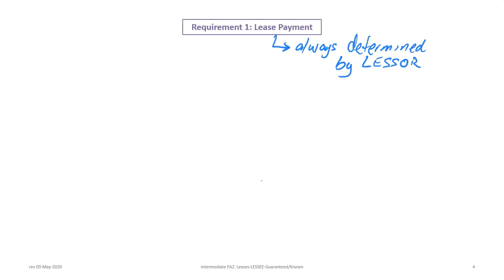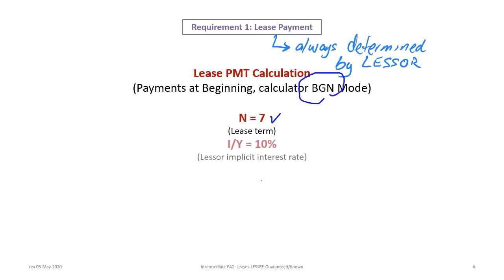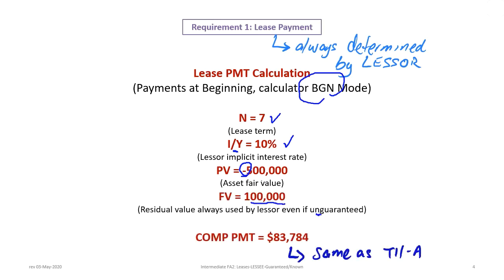Determining the lease payment is always done by the lessor, never by the lessee, and payments are usually made at the beginning of the period, so your calculator should be in begin mode. We start with a lease term N of 7, IY of 10% (the lessor rate), PV entered as negative $500,000 (the asset fair value), and FV of $100,000 for the guaranteed residual. Computing the payment gives $83,784 — the same as in Tutorial 11a.